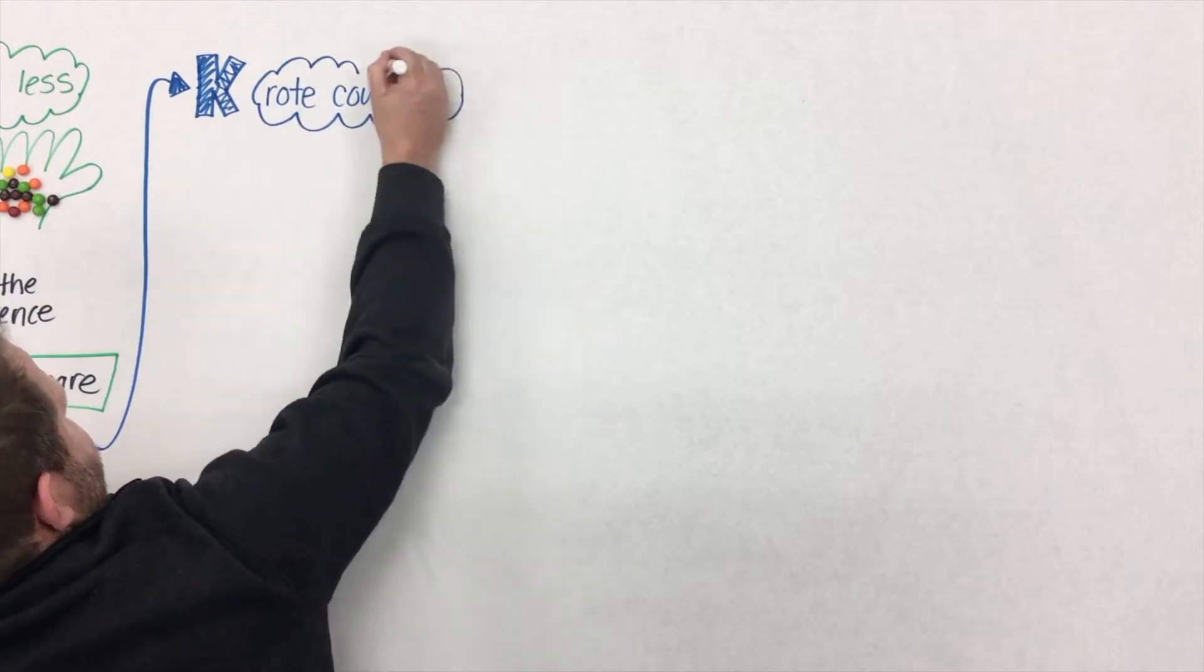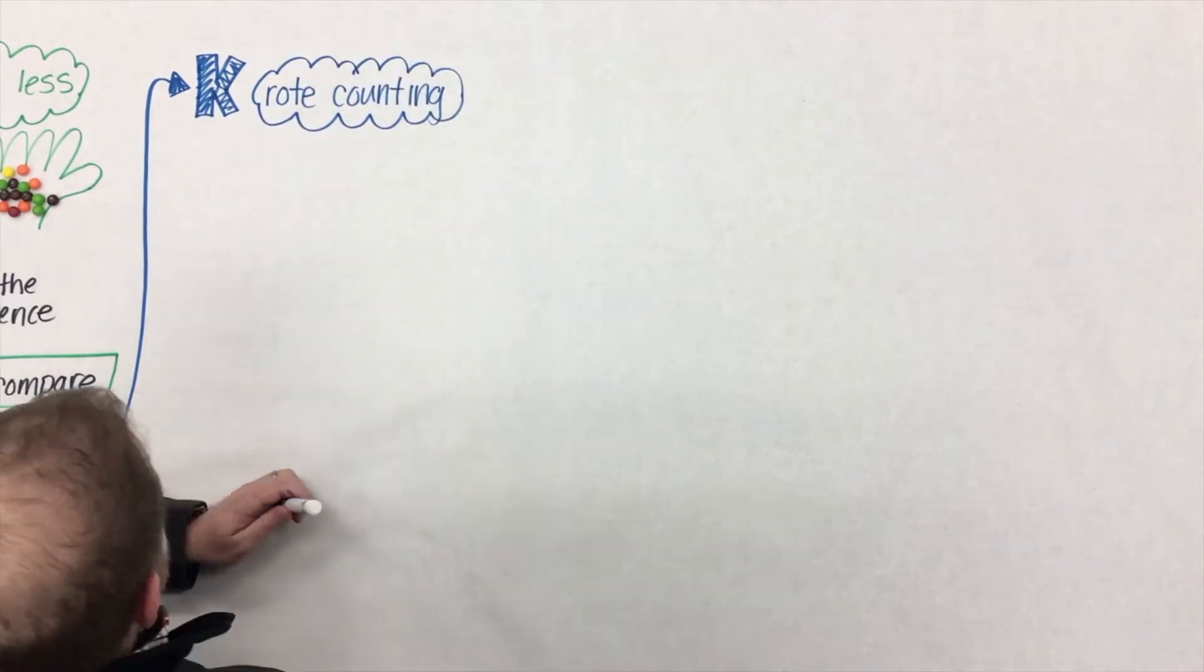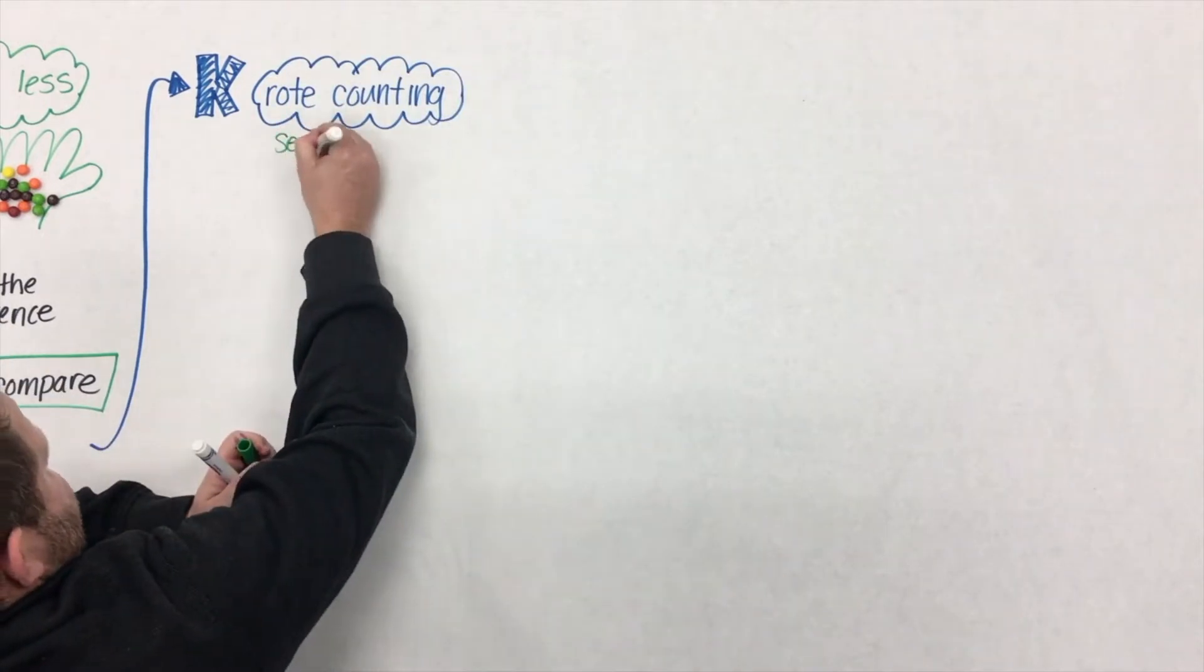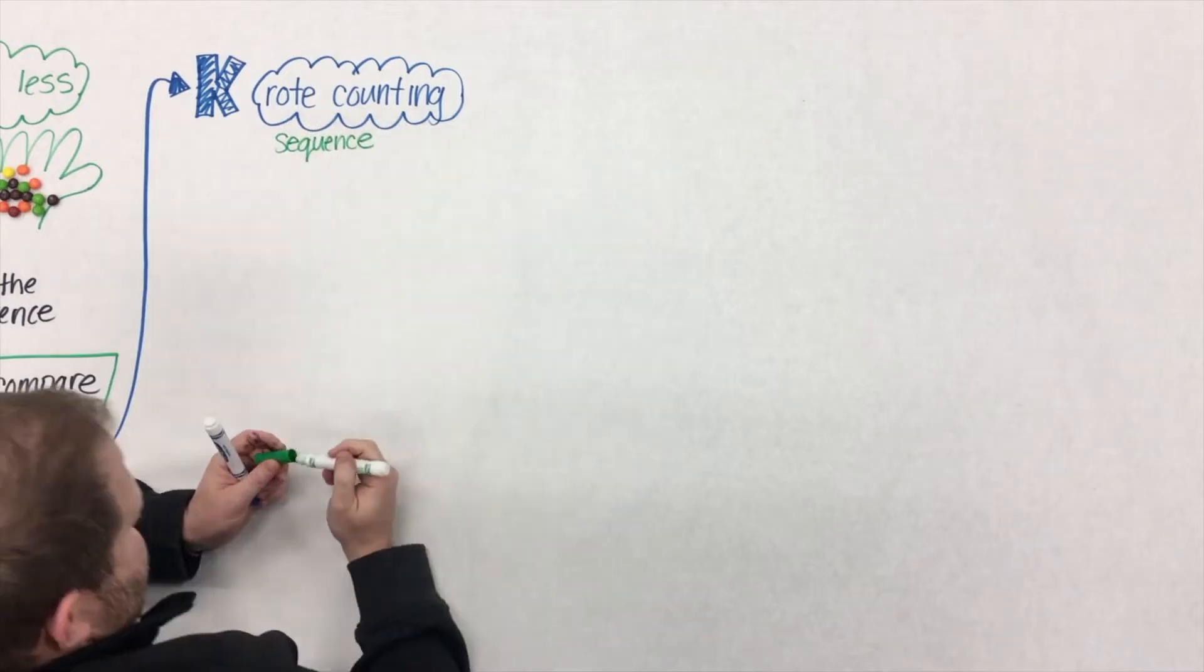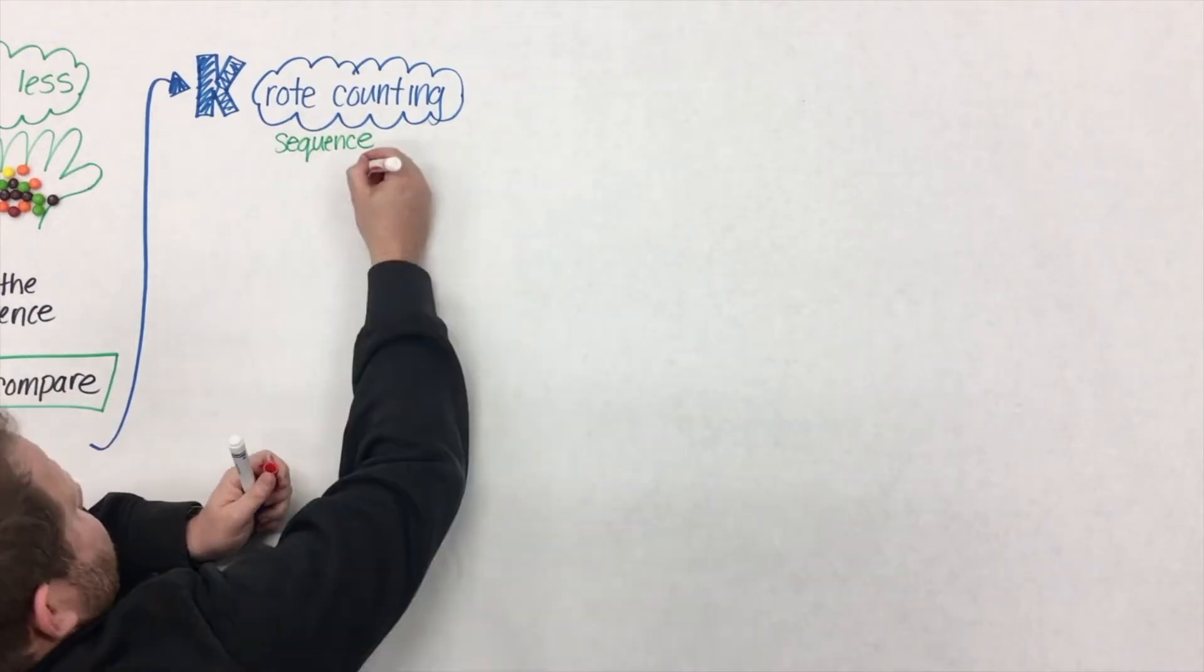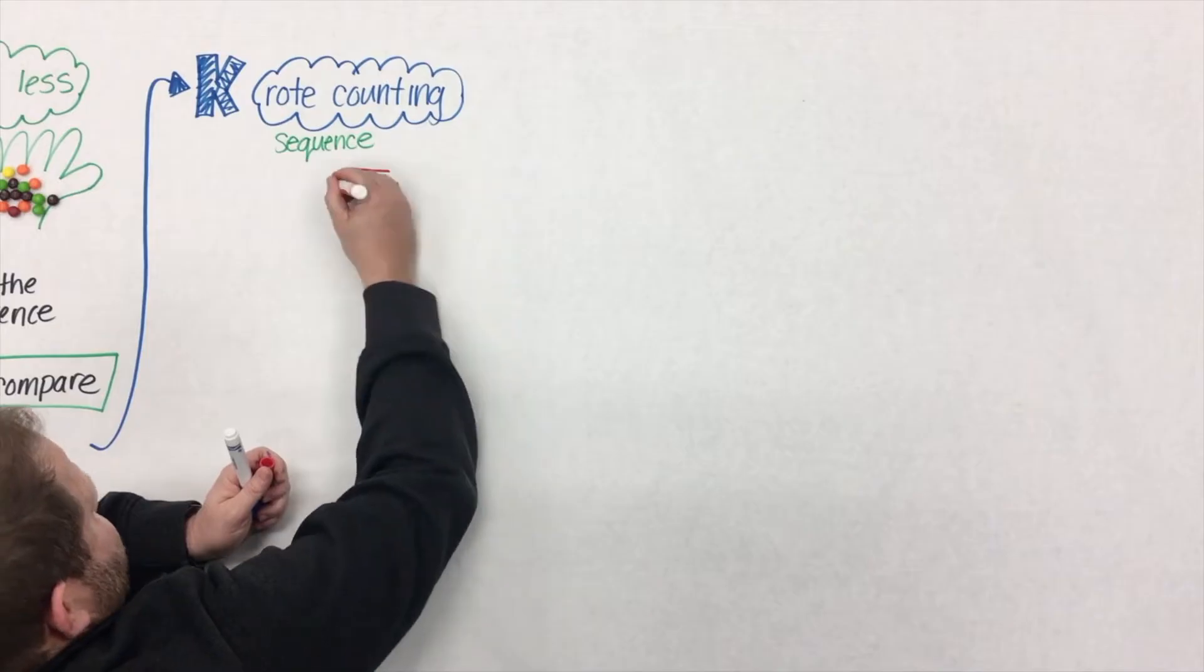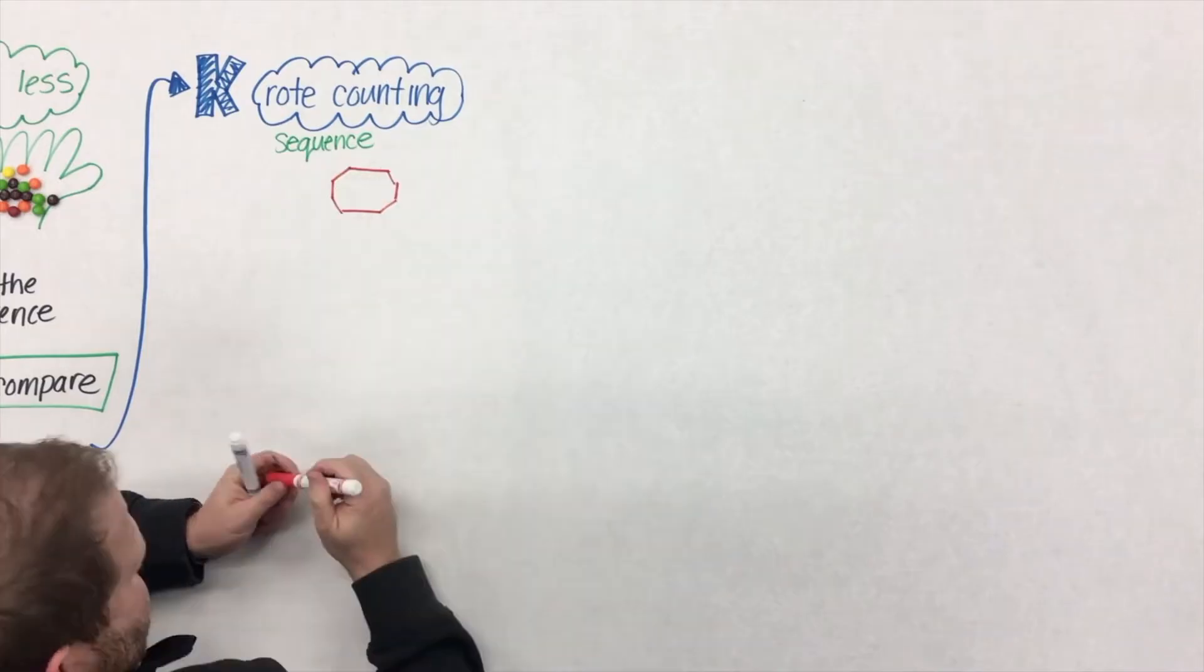As students are learning the alphabet, they might say LMNOP and have no idea that there's actually letters embedded in there. Rote counting, same thing. Students are just working on that count sequence, the reciting of names.